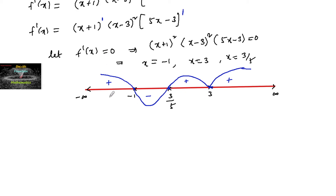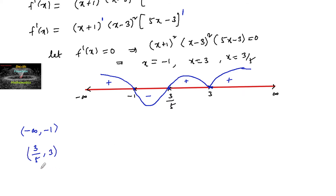By using the wavy curve method we can confirm: f is increasing on (−∞, −1), increasing on (3/5, 3), and increasing on (3, +∞). The function is decreasing on the interval (−1, 3/5).